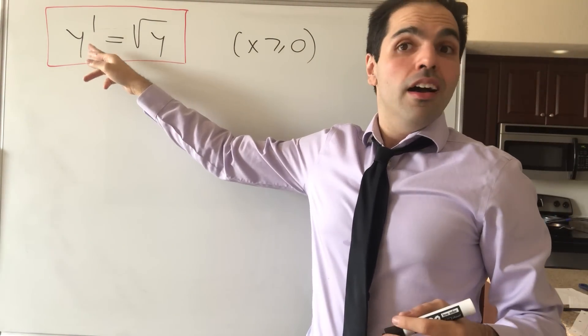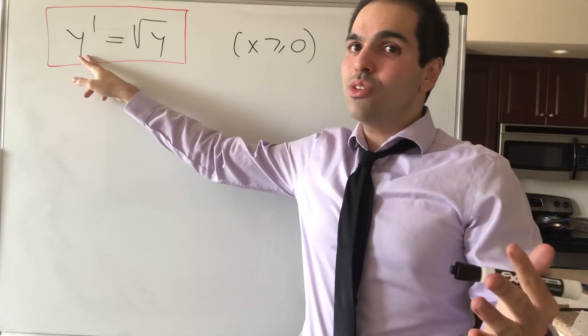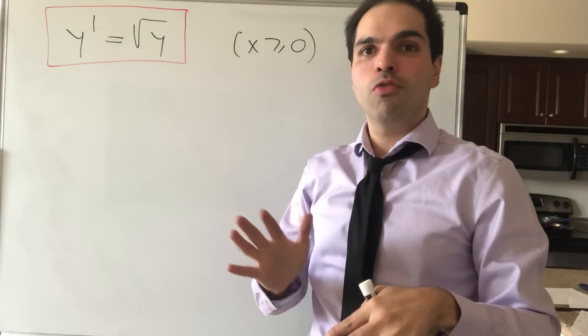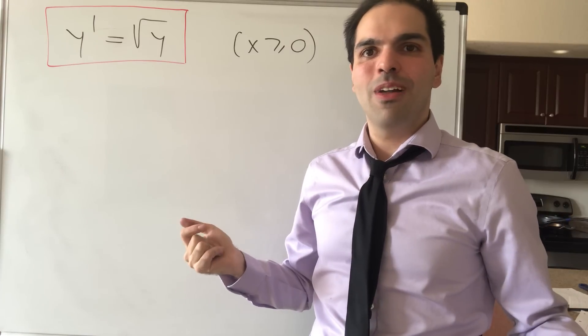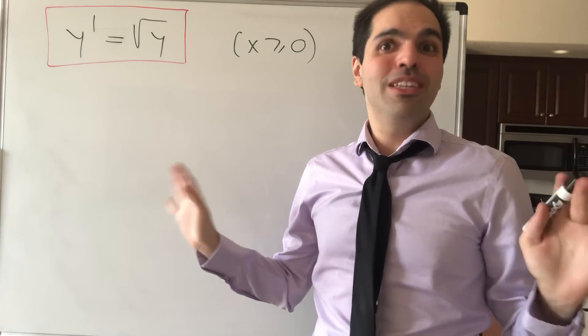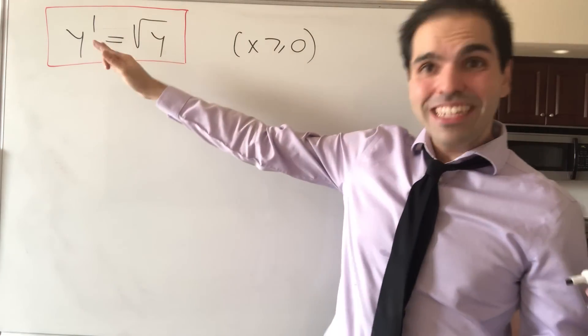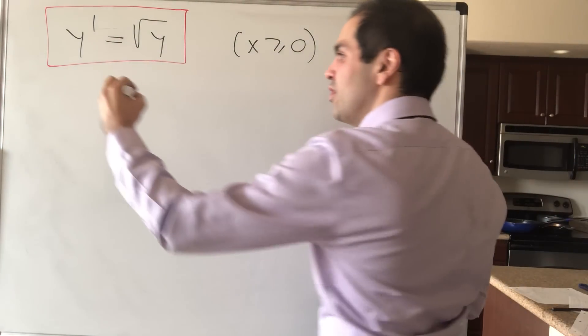Now, for this equation, one way to solve it is to write y prime as dy over dx and cross-multiplying. But let's keep it pure for a second, please. And in particular, let's divide by square root of y.